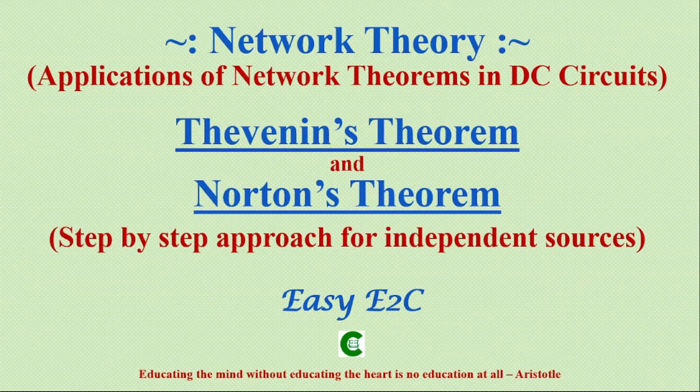If we apply Thevenin's theorem, that energy source is a voltage source and that single resistor is connected in series with it. If we apply Norton's theorem, the energy source will be a current source and that single resistor will be connected in parallel, and of course the variable component will also be there in the circuit.